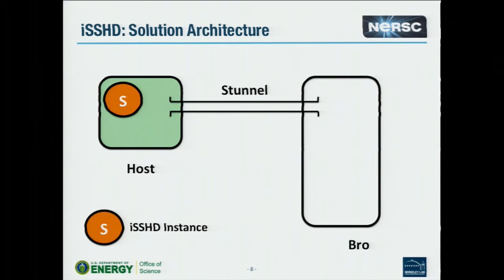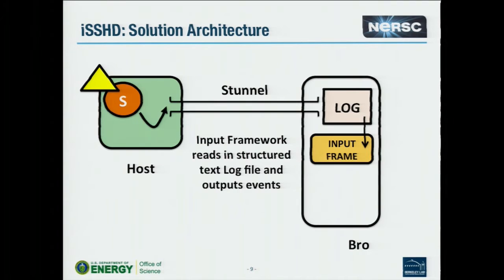This is how it works. We have the instrumented SSH instance running on a host. There's an S-tunnel connected to a local port, which drops the data back to the Bro analysis backend. When somebody logs in, SSHD starts recording data and dumping it into the tunnel. The log is the point of truth — raw data out of the instrumented SSH before Bro even looks at it. You don't even need Bro to gain utility out of the instrumented SSH.